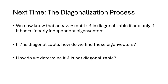So now we know that an n by n matrix is diagonalizable if and only if it has n linearly independent eigenvectors. This gives us two big questions: if A is diagonalizable, how do we find these eigenvectors and actually perform the diagonalization? And how do we determine if a square matrix is not diagonalizable? We're going to answer those questions in the next lecture.